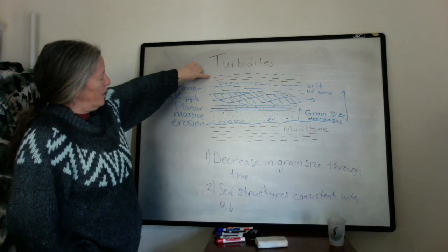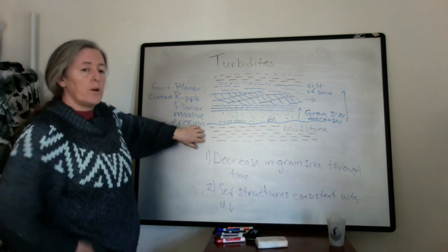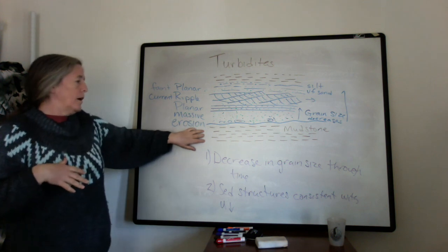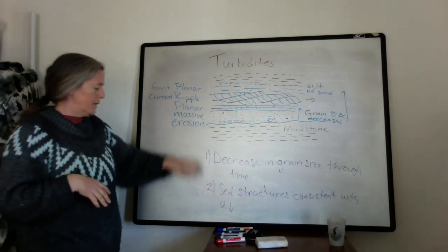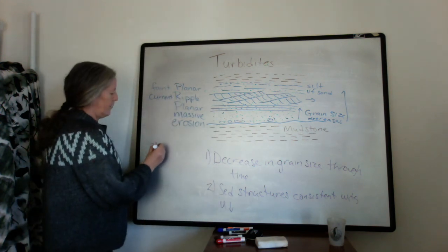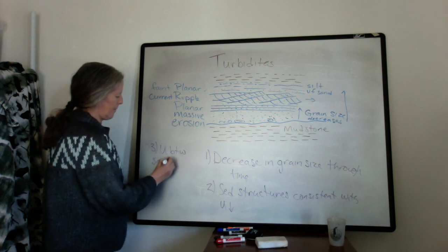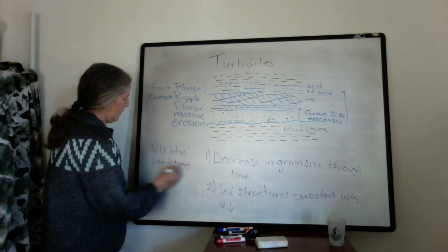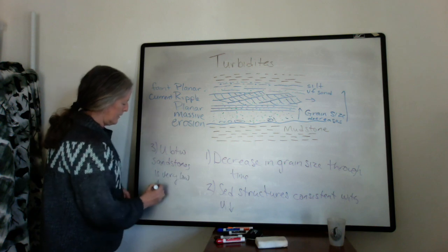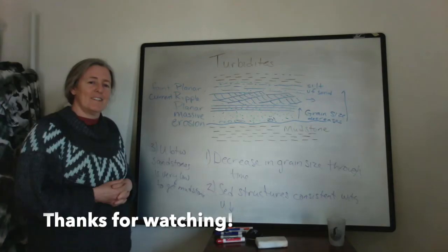We also have mudstone accumulating, and we know from the Hjulström diagram that flow speed has to be incredibly low for mud-sized grains to accumulate. So we can add a third point: the flow between turbidite events is very low — that's what gives us the mudstone. Thanks for watching.